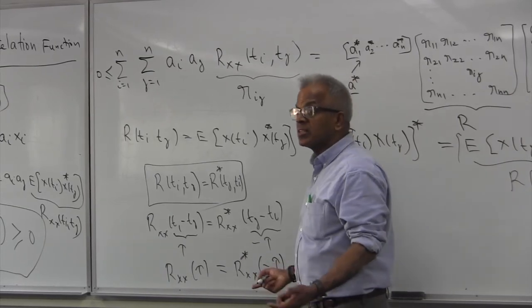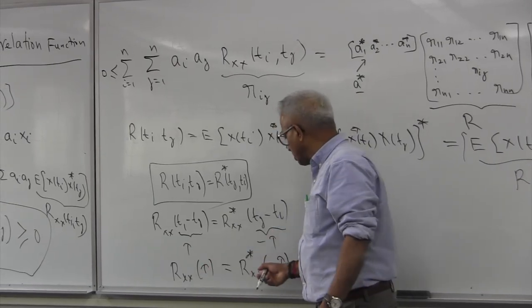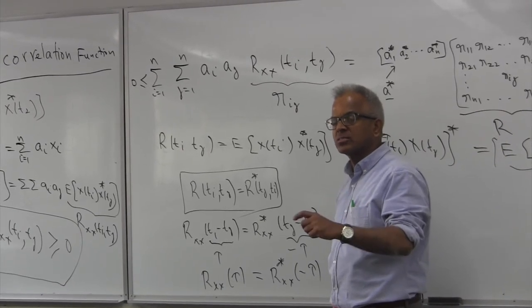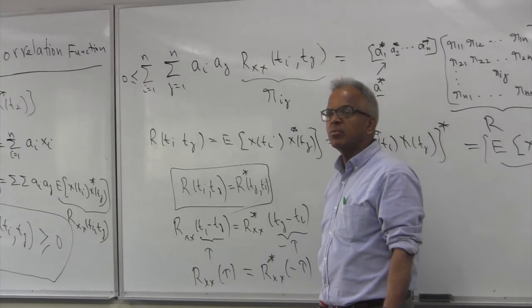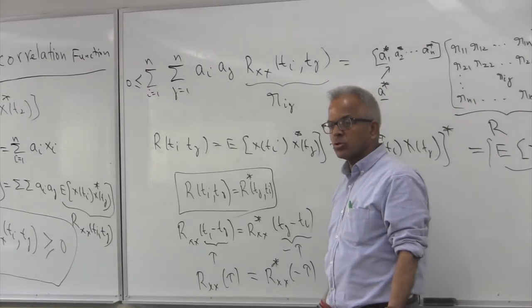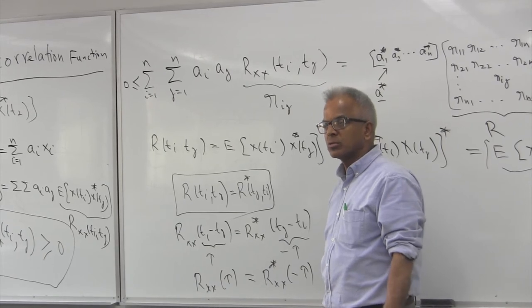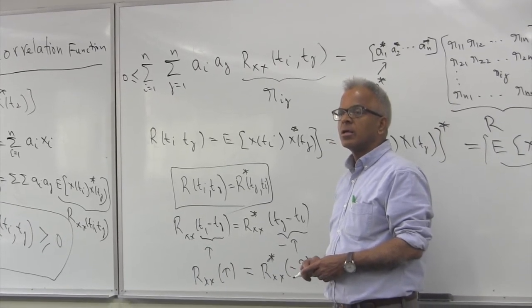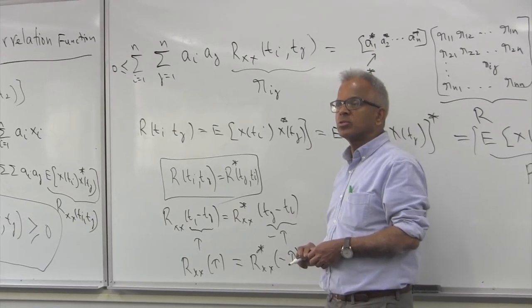And if the process is real, the star has no meaning. That means Rxx(tau) is Rxx(minus tau). What do you call such a function? A function where Rxx(tau) is the same as Rxx(minus tau). Even function. So the autocorrelation function is an even function for a real process. So that's the theorem, autocorrelation function is even if the process is real.